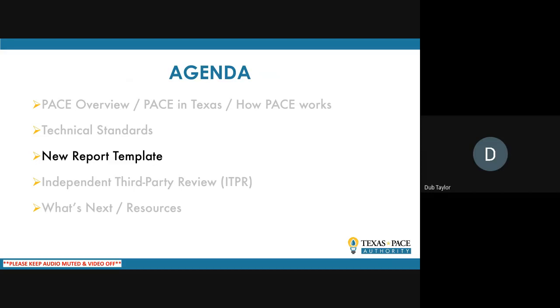Each project must have an energy and water analysis that conforms to TPA guidelines, performed by an engineer or contractor. Two key components: the baseline analysis to understand the current unimproved situation, and the projected savings analysis to understand the delta — the benefit between the two. This is all recorded in an energy and water assessment report. To this point, that report format has been left to engineers and contractors to develop, which creates challenges in review. So TPA has created a new report template.